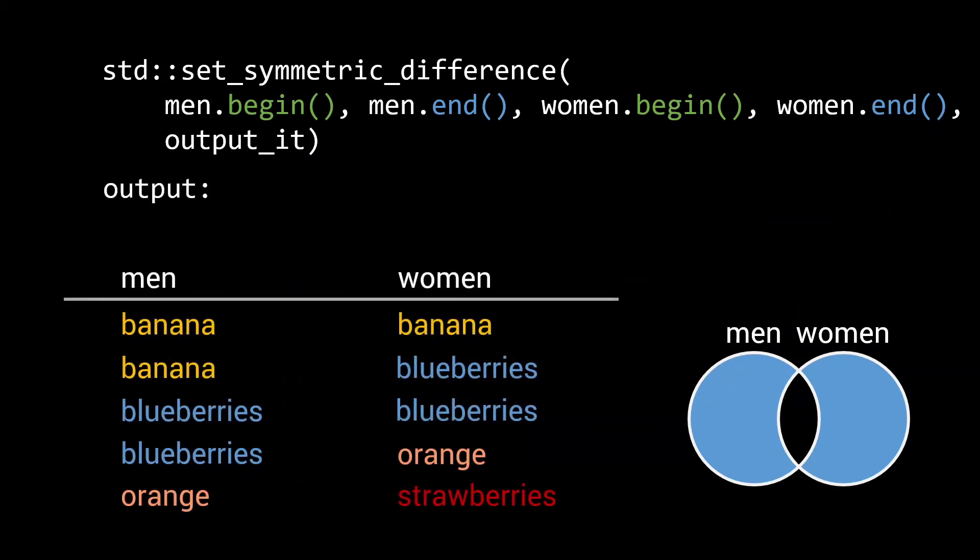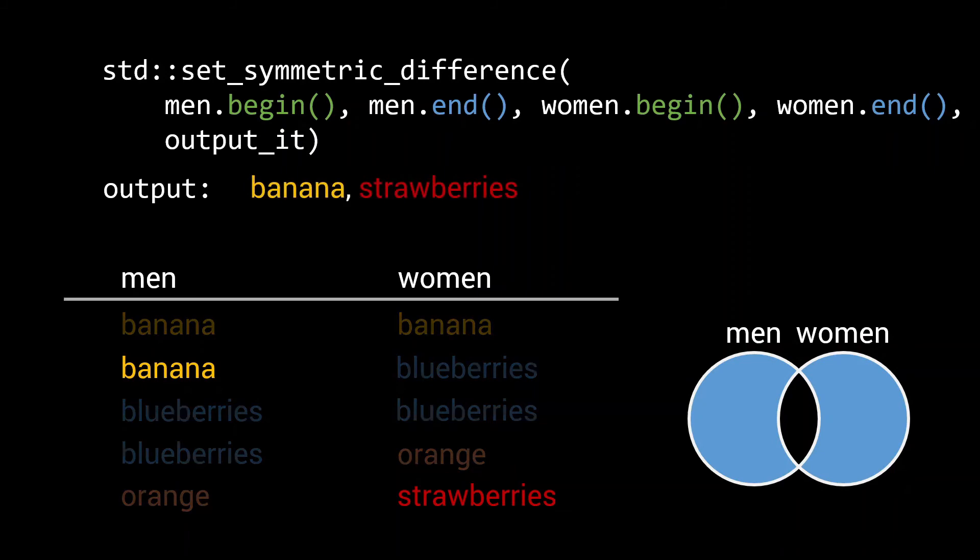Looking at our example input, there is a single banana element that is unique to the men's set, and the strawberries element that is unique to the women's set.